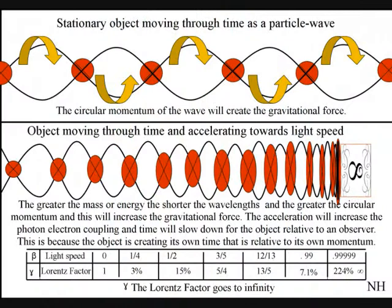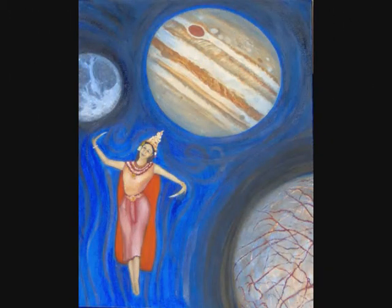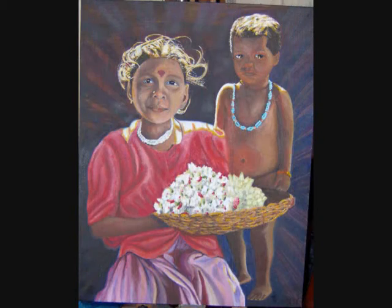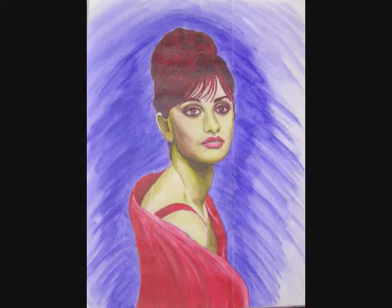The greater the mass or energy of an object, the larger or more rapid the particle wave function collapses. This will increase the number of photon-electron couplings, increasing the delay factor, and time will slow down, relative to an observer in the object's own created space-time, or reference frame.